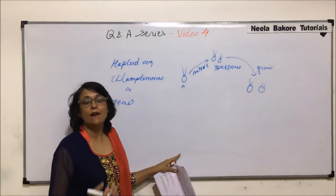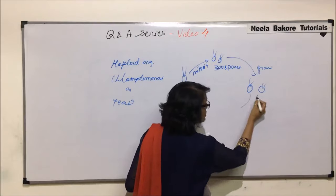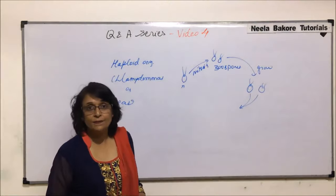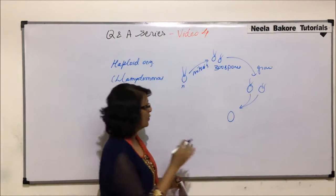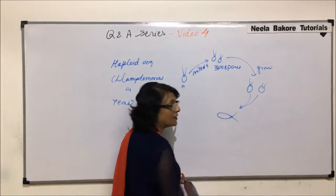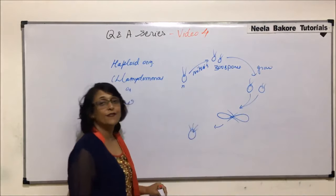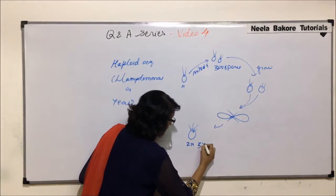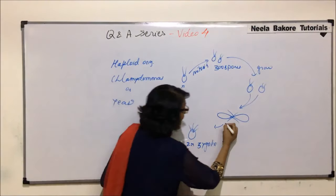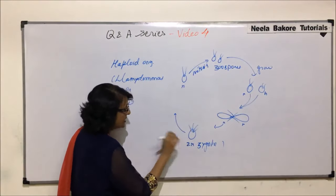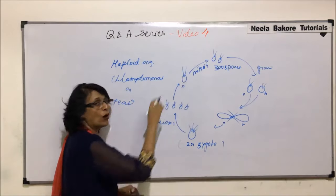For sexual reproduction and genetic recombination, two Chlamydomonas cells start behaving like gametes and fuse to form a quadriflagellate 2N zygote. This fusion is called hologamy — the haploid cells act as gametes. The zygote then undergoes meiosis to form four haploid cells, which grow into normal adult cells. So gamete formation here differs from higher organisms — individual cells themselves act as gametes.